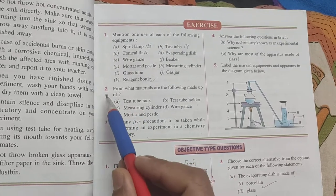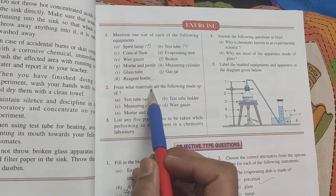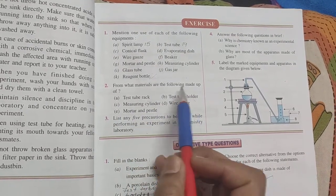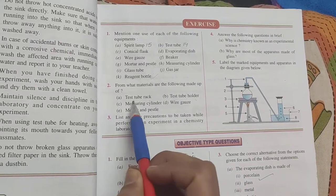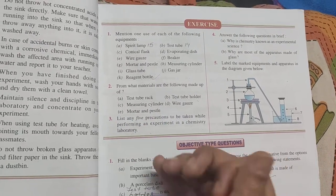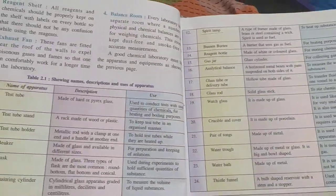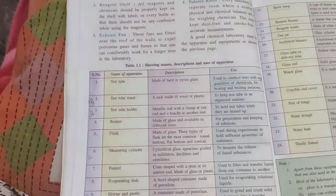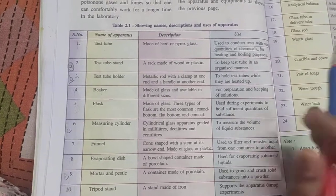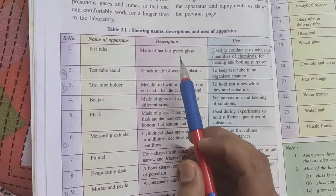Now come to question number two: from what material are the following made up of? So again, all the answers are given on page 14. In the first question we have written their uses.